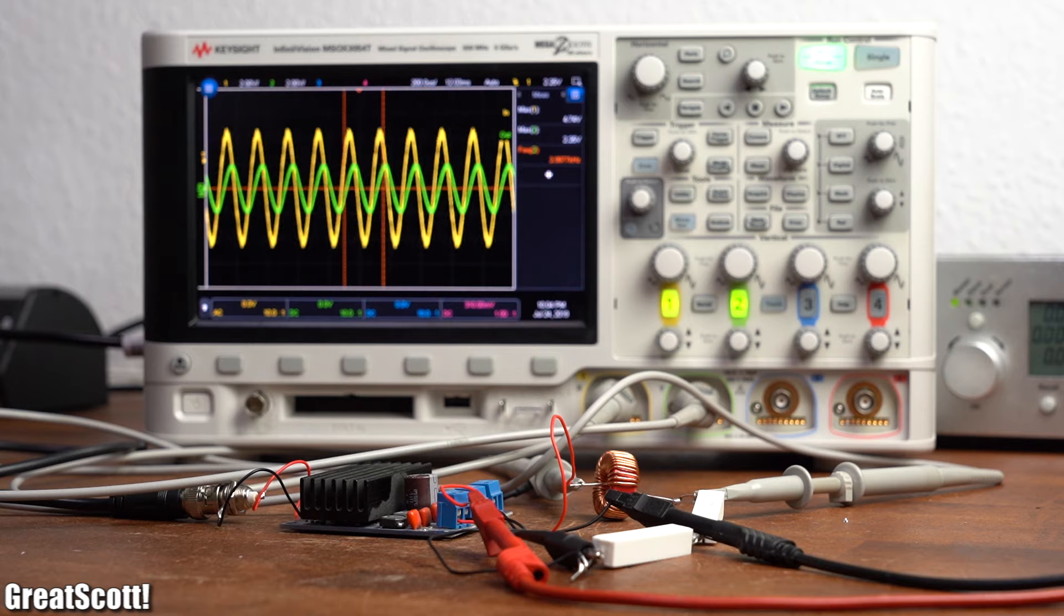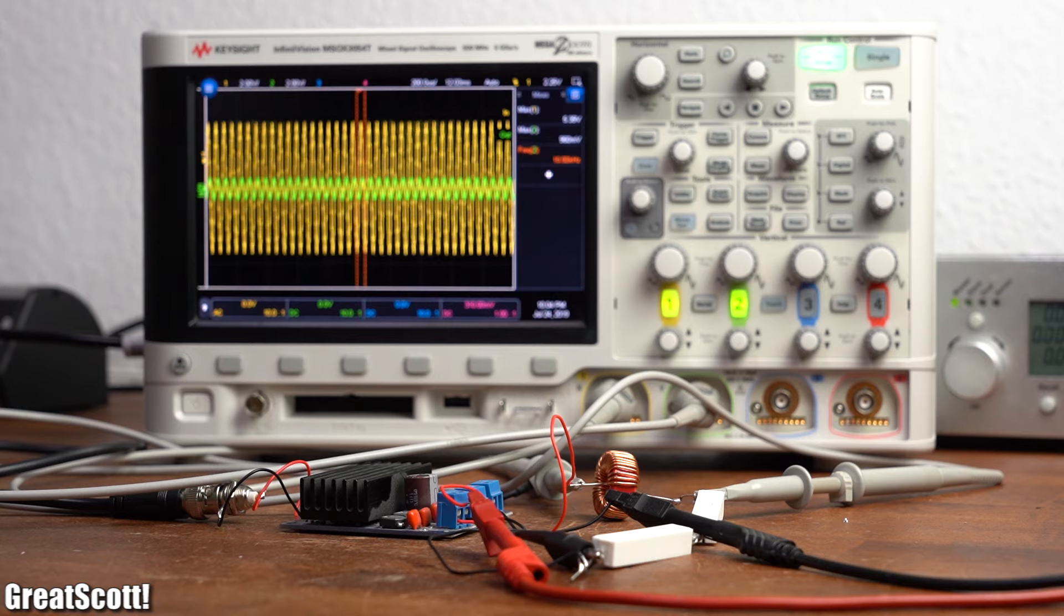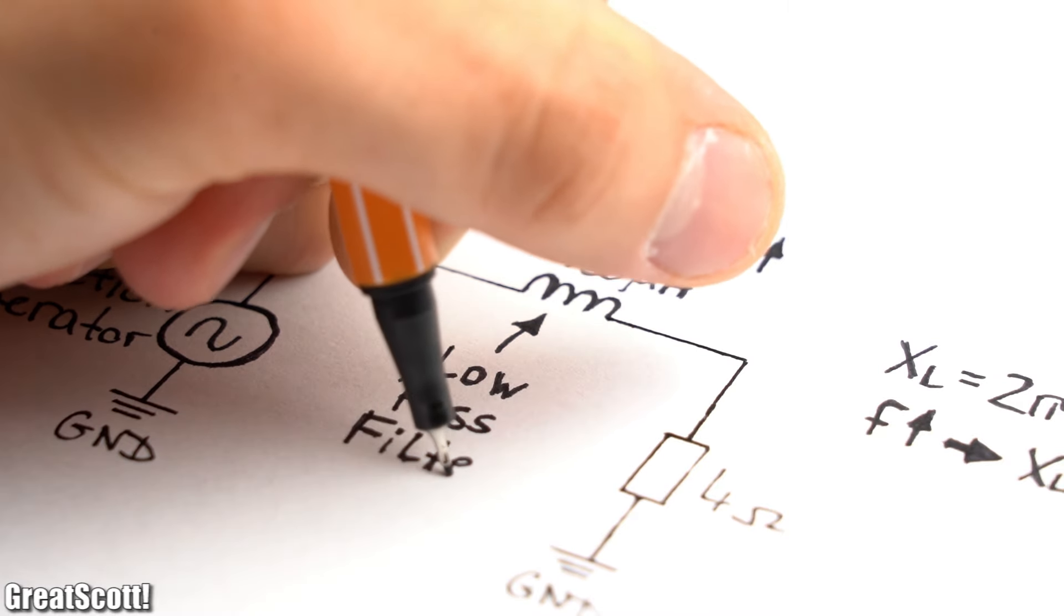Anyway, this experiment shows us that we could use an inductor to damp high-frequent voltages, which means the inductor alone would act as a low-pass filter.